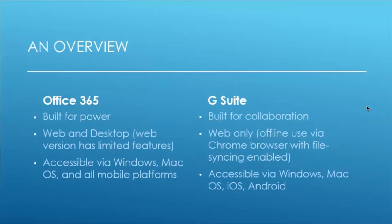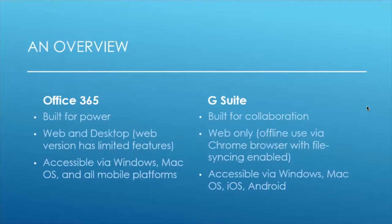Office 365 and G Suite were originally created from completely different backgrounds. Office 365 has been around for a long time — we're all familiar with Microsoft Word, which has been around nearly since the beginning of personal computing, and has grown into PowerPoint, Excel, and the rest. Whereas G Suite started as Google's infamous search engine and grew from there, giving the option to collaboratively edit documents. Despite coming to very similar current iterations, they definitely started from different places, and those advantages and disadvantages come into play when we get into the details.